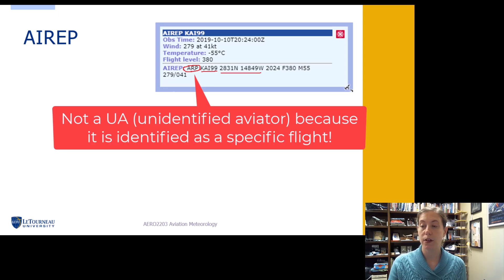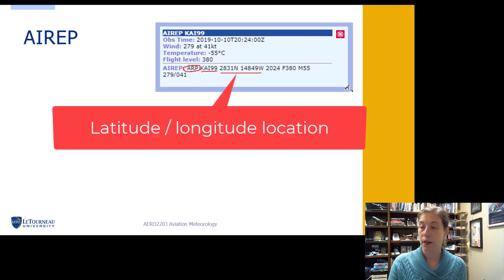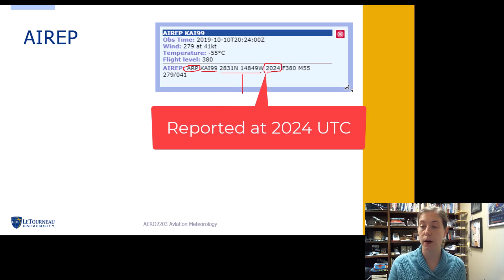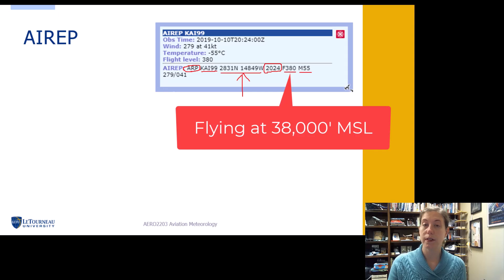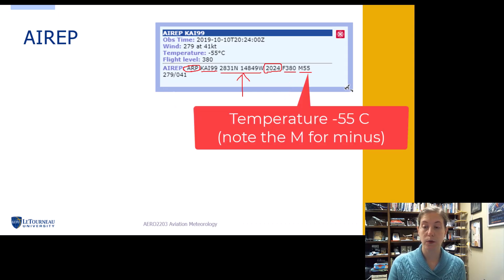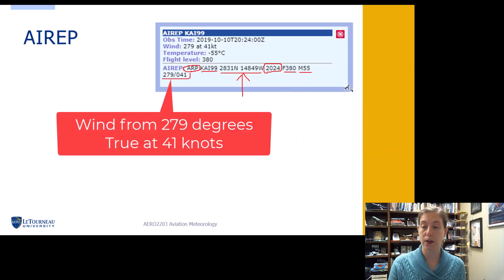Then we have a latitude and longitude location. It was reported at 2024 UTC. This part is definitely going to be automated. It is flying at flight level 380 and the temperature is negative 55 degrees. Wind is from 279 degrees true at 41 knots.